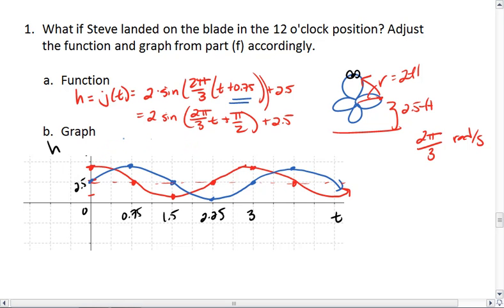Here's the easier way to write this function, h equals k(t). Since we know the red one starts at the top, let's just make it a cosine function. We still have the same amplitude, the same angular speed, and the same vertical shift.